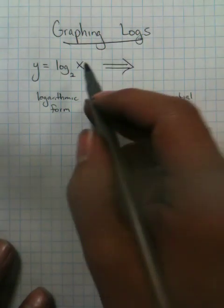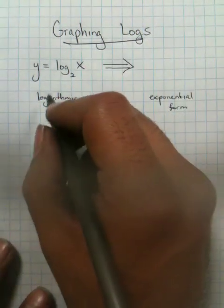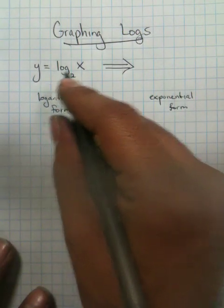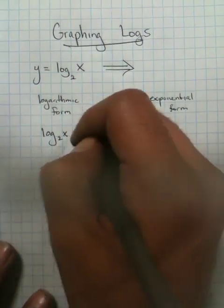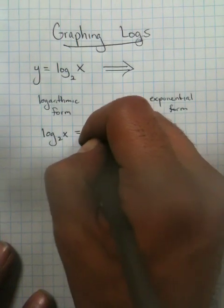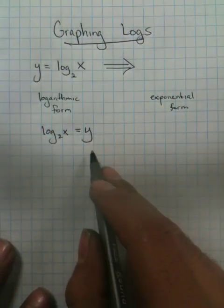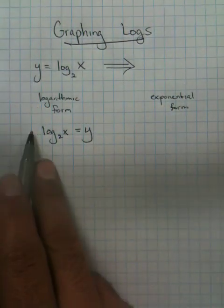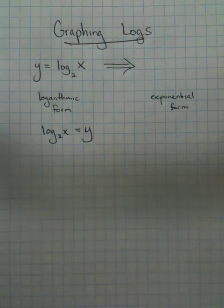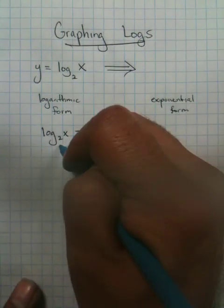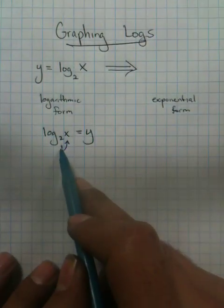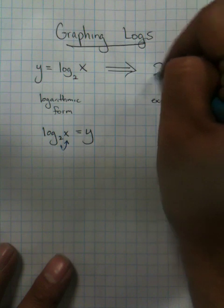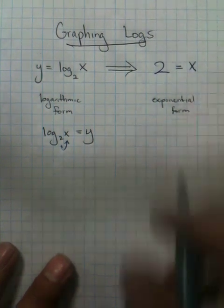Now what happens is typically when I'm changing something between logarithmic form and exponential form, I'll have my log value equal y. I'll do it in reverse order. It's the same exact thing. But the technique I use to teach my students is I say let's make this 2 equal x.